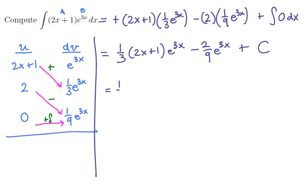Now, just like last time, you might remember that we could pull a 1 ninth e to the 3x out. That's going to leave us with a 3 times 2x plus 1. And over here, it's just going to leave us with a 2.